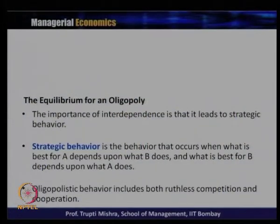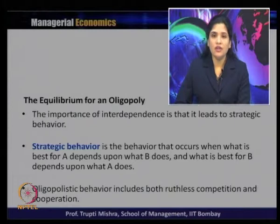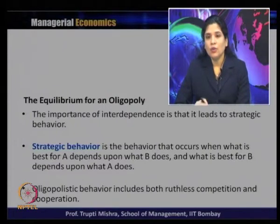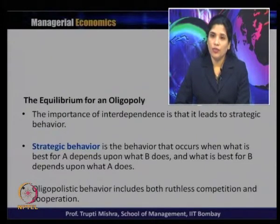Equilibrium is often absent in oligopoly because of interdependence — there is interdependence between firms when it comes to action and reaction related to price and output decisions. This interdependence leads to strategic behavior. Strategic behavior is the behavior that occurs when what is best for A depends upon what B does, and what is best for B depends upon what A does. The strategy of one firm is not dependent on their own decision alone but on what strategy the other firm takes.